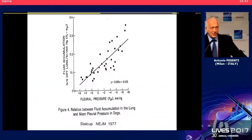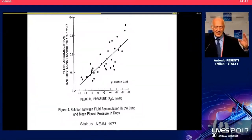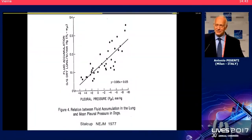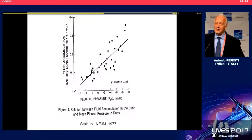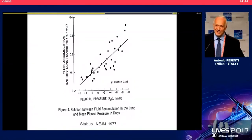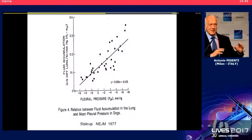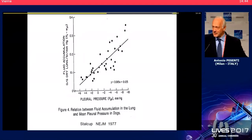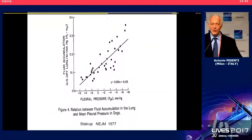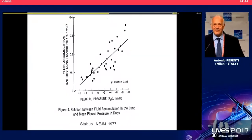In dogs, lung edema and fluid accumulation in the lung is proportional to the drop in pleural pressure. There is a huge amount of data on that. That does not mean spontaneous breathing should be avoided, but spontaneous breathing and inspiratory efforts might decompensate the heart — either when the heart is already almost failing, or when bronchoconstriction, high resistance, or low compliance require very high negative pressures.